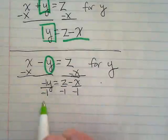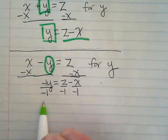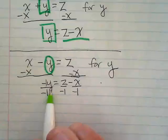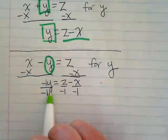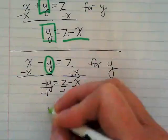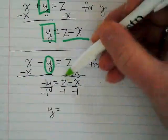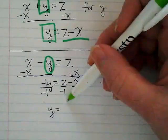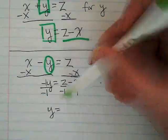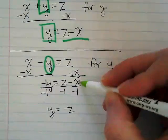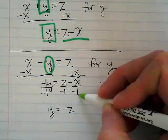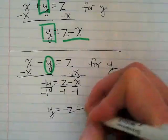Negative one divided by negative one gives us a positive one. That's going to stay with this Y. But now it's okay because it's going to be a positive Y. Z divided by negative one is going to change it to a negative Z. Negative X divided by negative one becomes positive X.